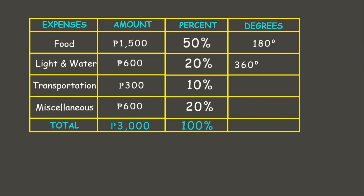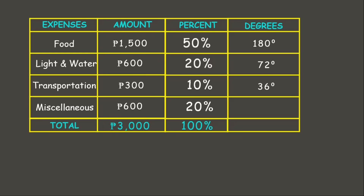Next, for light and water: 360 degrees times 20 percent. The decimal form of 20 is 0.20, so 360 times 0.20 is 72 degrees. For transportation, which is 10 percent: 360 times 0.10 is 36 degrees. Finally, miscellaneous is also 20 percent: 360 times 0.20 is 72 degrees. The total is 360 degrees.